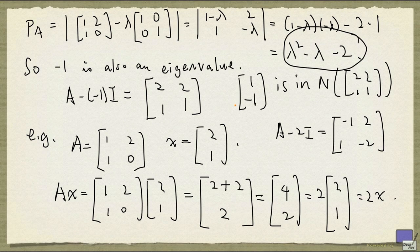To summarize, in order to find all the eigenvalues of the matrix, first you form the characteristic polynomial of that matrix, and then find all the roots of that polynomial. And to find eigenvector for a particular eigenvalue, you just find a non-zero vector in the null space of A minus that eigenvalue times I.